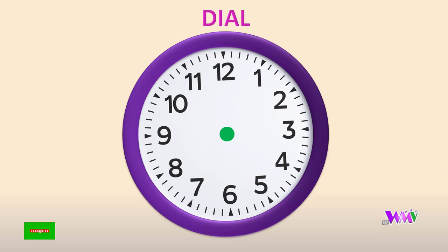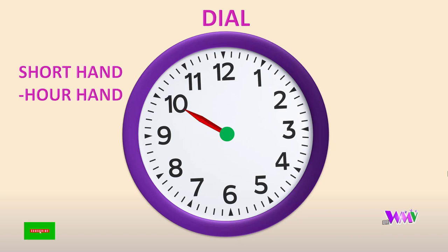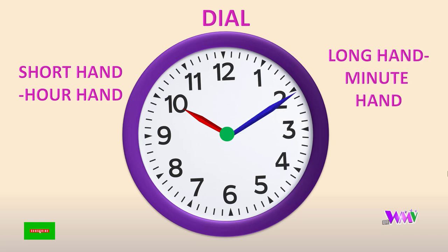A clock has two hands. The short hand is called as the hour hand. It shows hours. The long hand is called as the minute hand. It shows minutes.